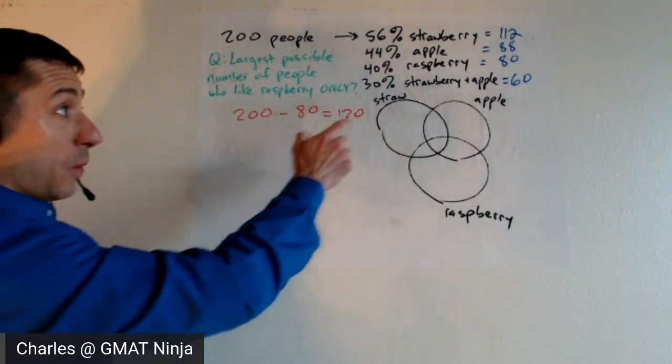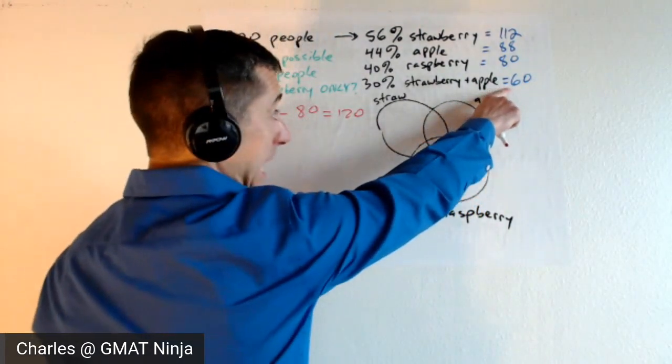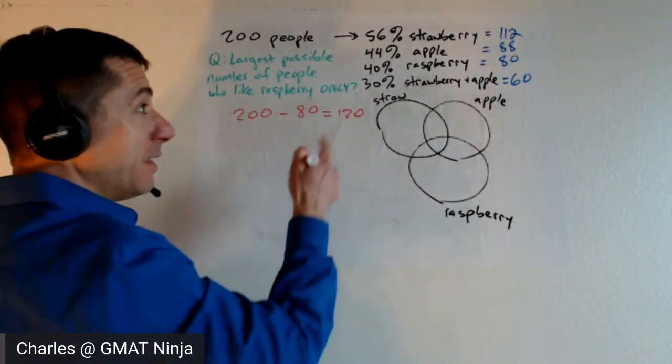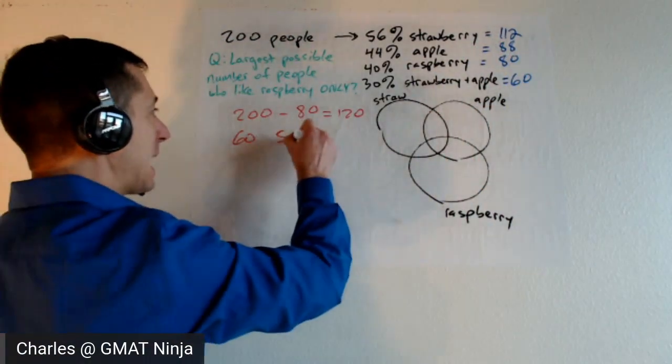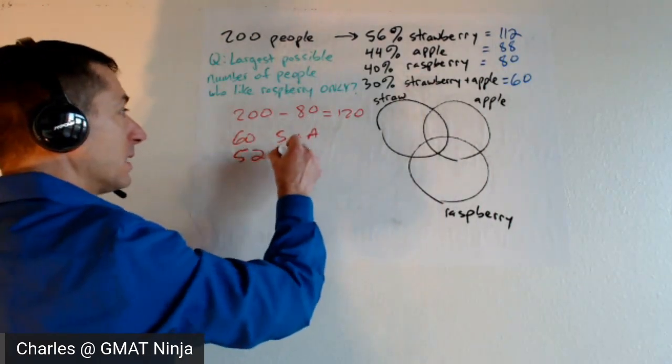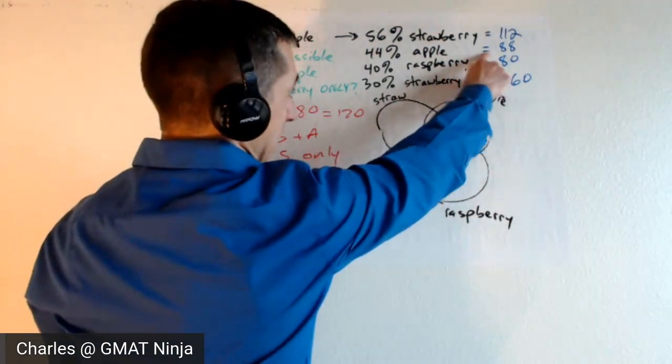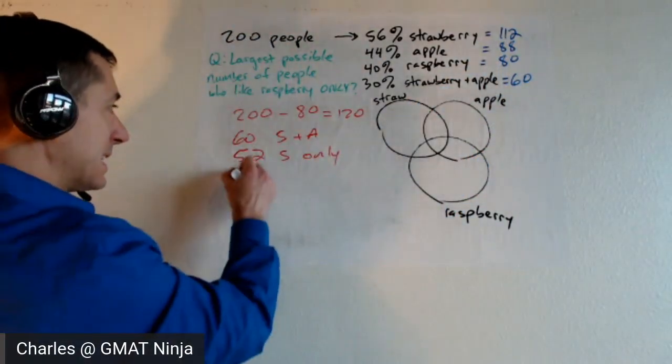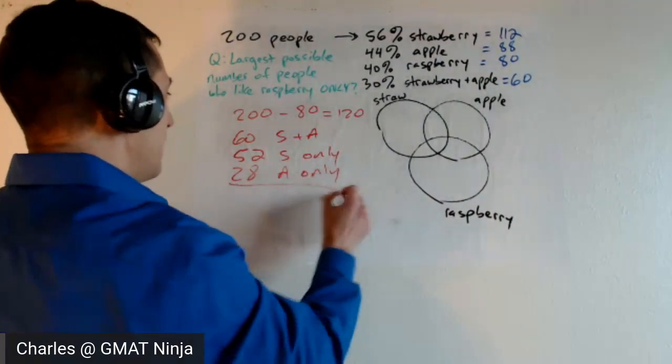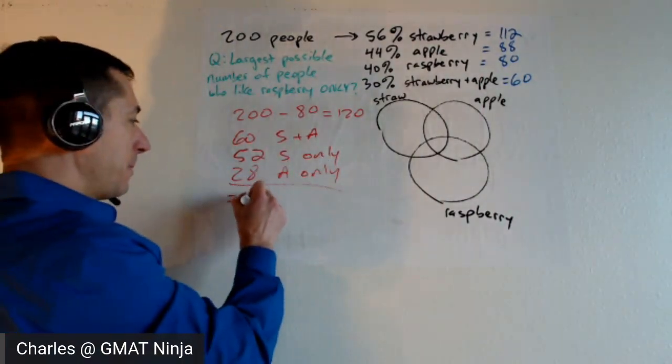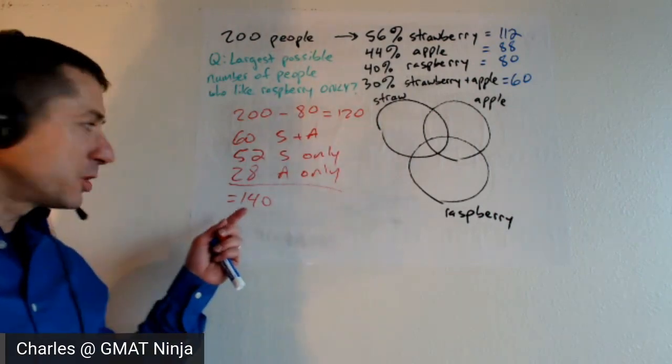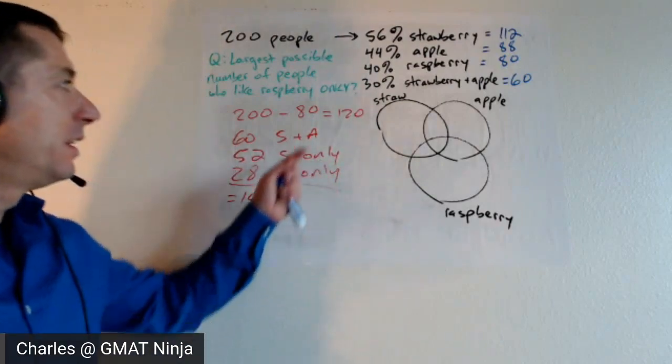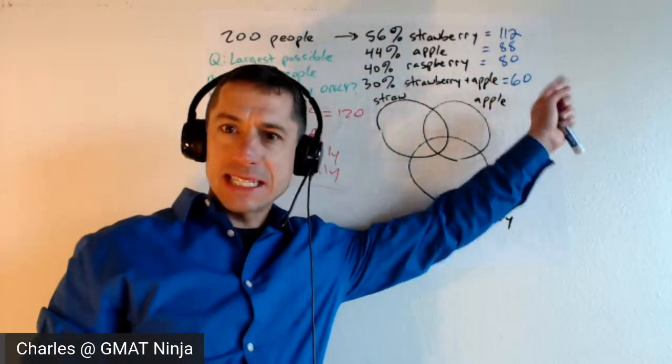The answer is no, because if we've got 60 people that like both strawberry and apple, 112 that like strawberry in total, then what we're saying is it has to be the case that 60 like strawberry and apple, 52 are going to like strawberry only. And we can do the same math with the apple. If 60 like both strawberry and apple, that means that 28 must like apple only in this scenario. And if you add all this up, we get 140 people, and that's impossible. There's no way we could have 140 people here total that like strawberry or apple or both, and then have 80 people that like raspberry. So 80 is definitely not your answer.